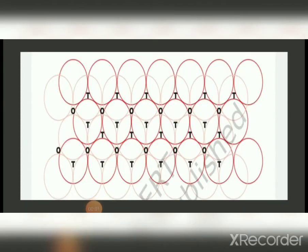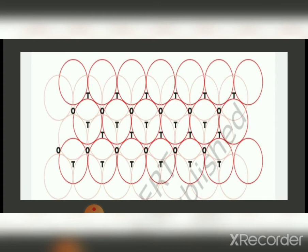For three-dimensional close packing from two-dimensional hexagonal close packing, consider the second layer placed over the first. The second layer spheres sit in the depressions of the first layer, so the alignment is different — if the first layer is type A, the second layer is type B. The triangular voids of the first layer not covered by spheres of the second layer give rise to two types of voids. Where a sphere of the second layer is above a void of the first layer, a tetrahedral void is formed. A tetrahedron is formed when the centers of four spheres are joined, and a tetrahedral void is marked as T.